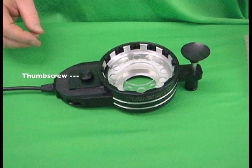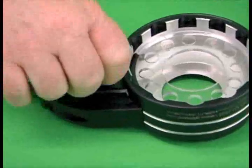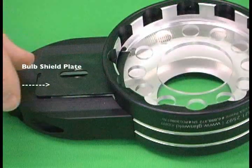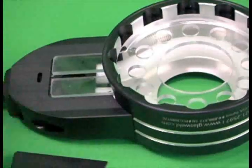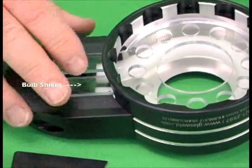With the Pro-Cure on its back, we first remove the thumb screw. Once the thumb screw is removed, we then remove the bulb shield plate. At this time, also remove the bulb shield.